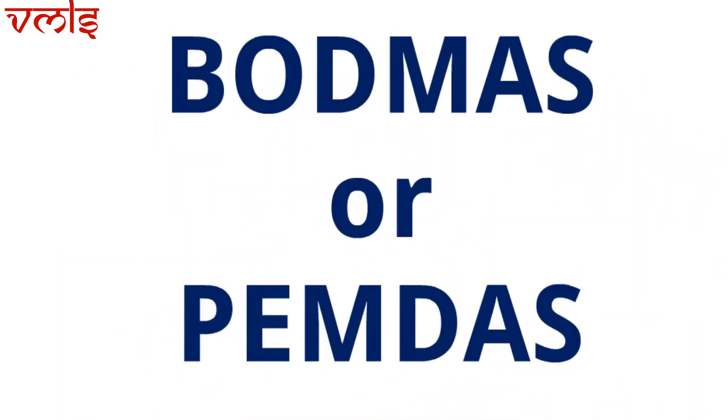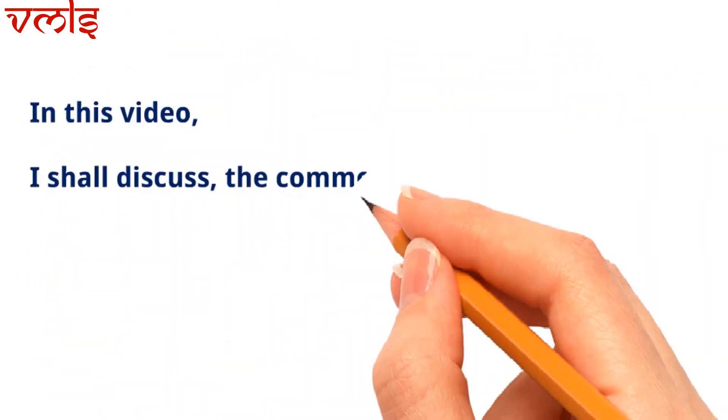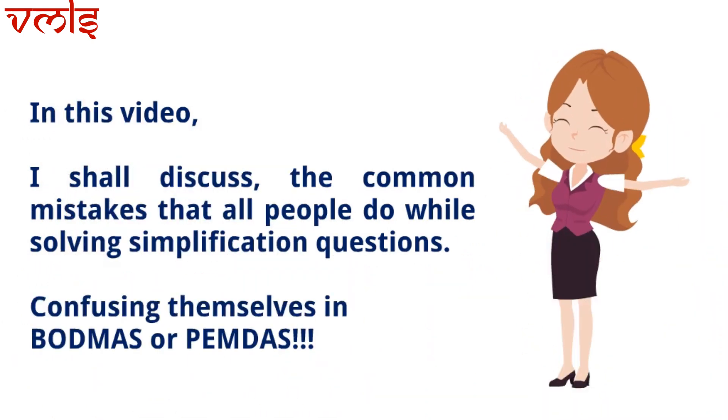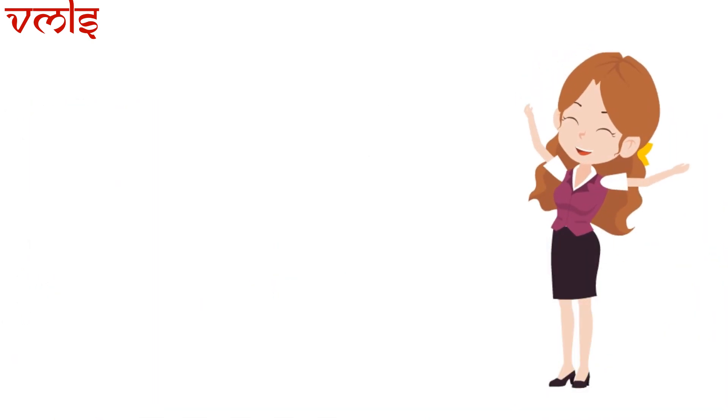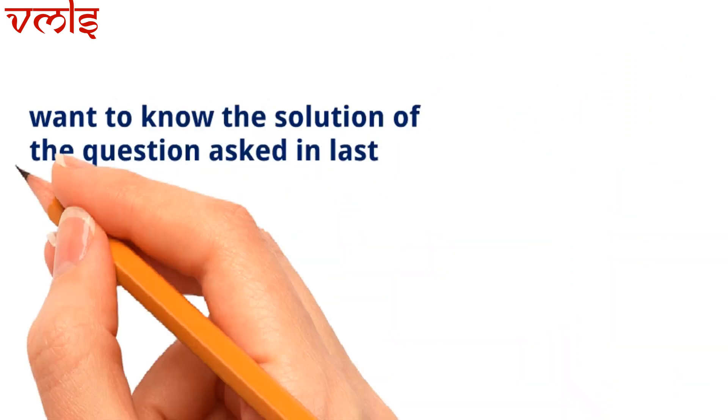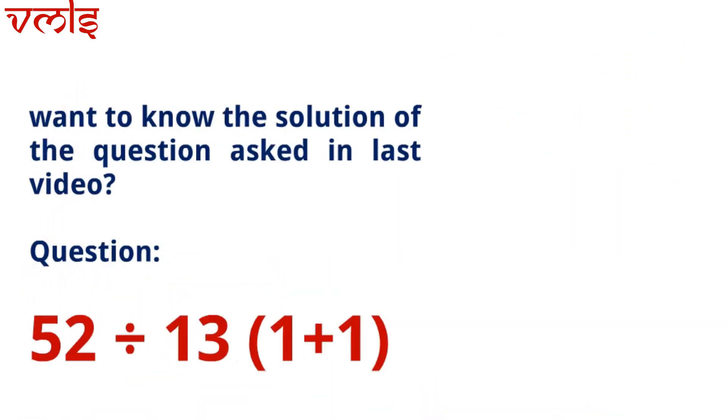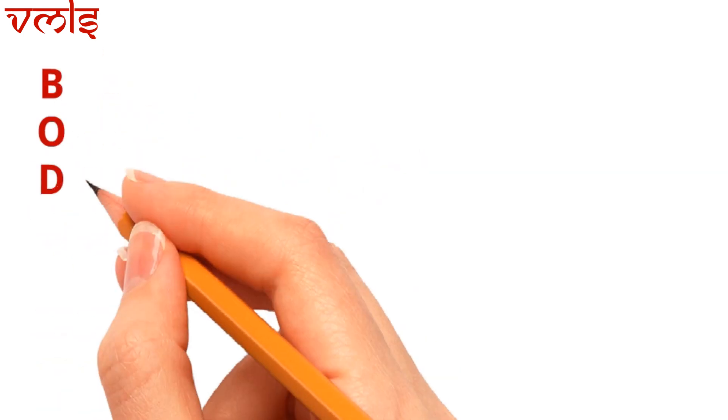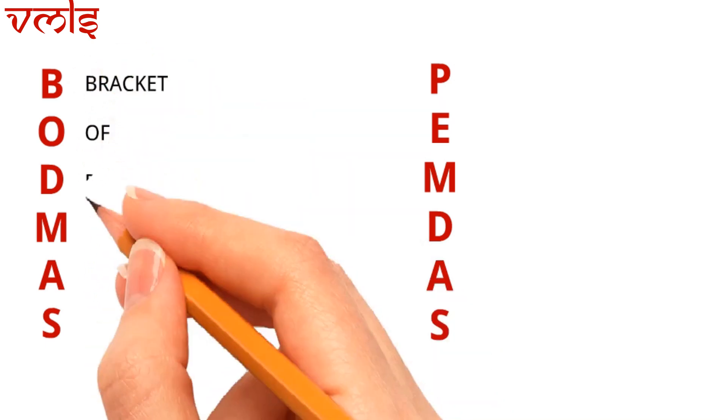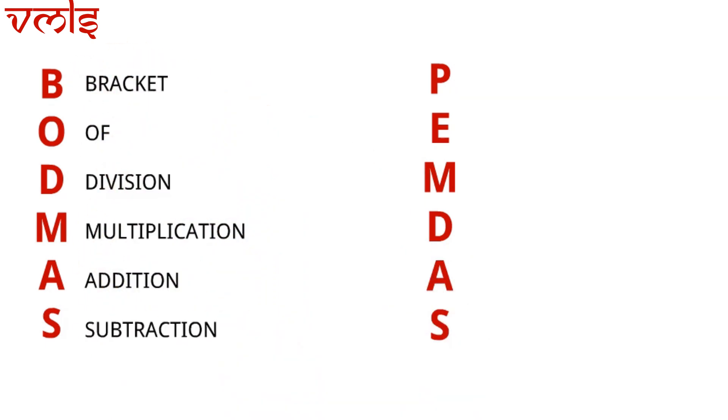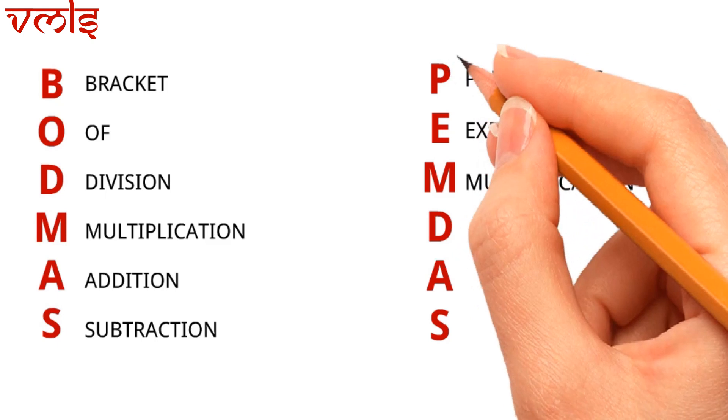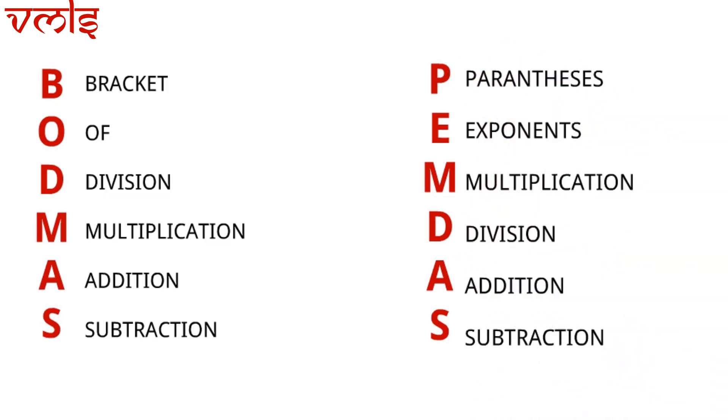Whether you use BODMAS or PEMDAS, in this video I shall discuss the common mistake that people do while solving these questions. Want to know the solution? BODMAS is Bracket, Of, Division, Multiplication, Addition, Subtraction, whereas PEMDAS is Parenthesis, Exponents, Multiplication, Division, Addition, and Subtraction. We solve the question in this format.